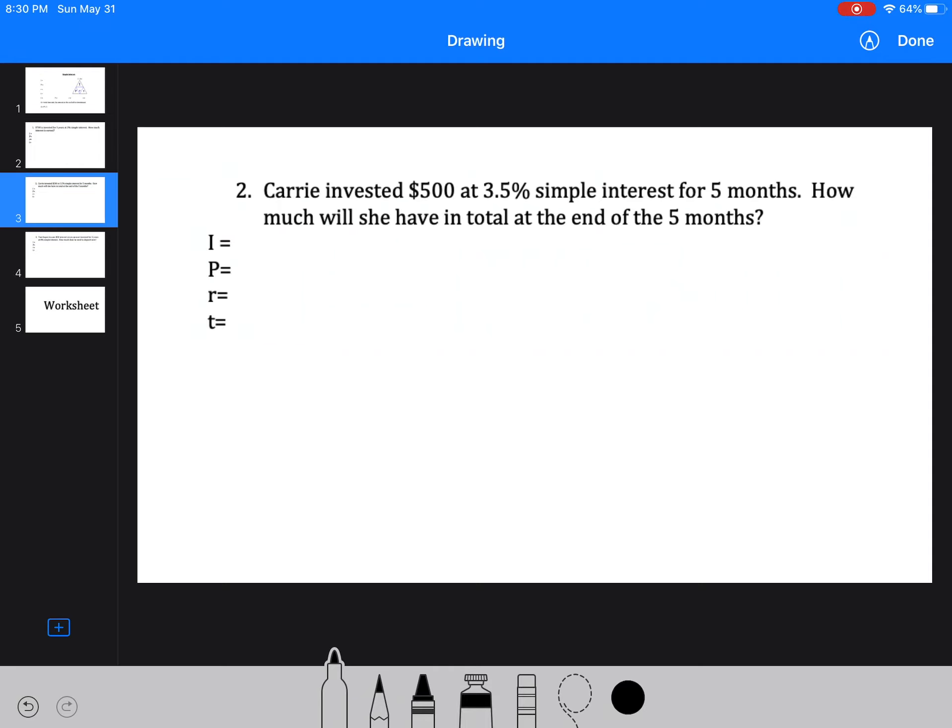Therefore, $105 interest. Next question. Same kind of thing. Carrie invested $500 for five months. So how much will she have in total at the end of the five months? So we still need to find the interest. We started with $500. We've got 3.5%, which is really 0.035. And our time, remember our time is always in years. Well, if we're looking at months, there's 12 months in a year, so this is going to be 5 over 12.